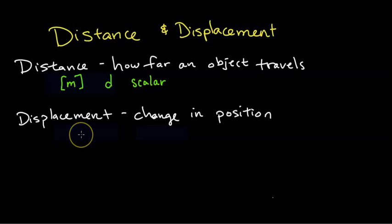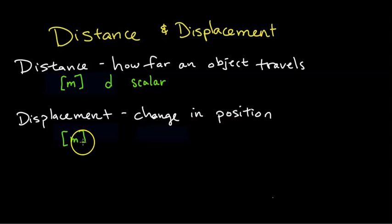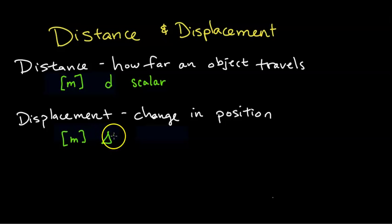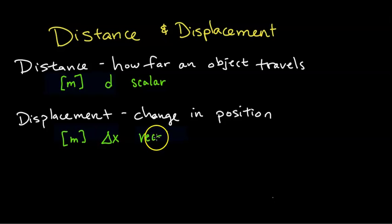Displacement, on the other hand, is a change in position. The unit for it is also meters, or any other length unit. The symbol for it will be delta x, or the change in position. Delta just means the change in. X is the position, and it is a vector, which means that it does have magnitude and direction, so it can be positive or negative.